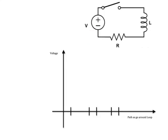Here we have an LR circuit. It's called an LR circuit because you have an inductor, which has the symbol L, and a resistor, which has the symbol R.